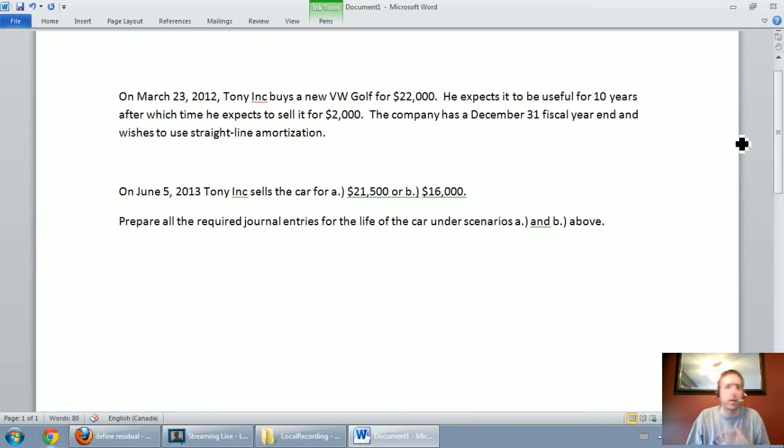So let's read through the question. On March 23rd, 2012, Tony Inc. buys a new Volkswagen Golf for $22,000. This is my dream car, I've been pricing them out but I haven't bought one yet. Anyway, I'm pretending I bought it today. He expects it to be useful for 10 years after which time he expects to sell it for $2,000. The company has a December 31st fiscal year end and wishes to use straight line amortization.